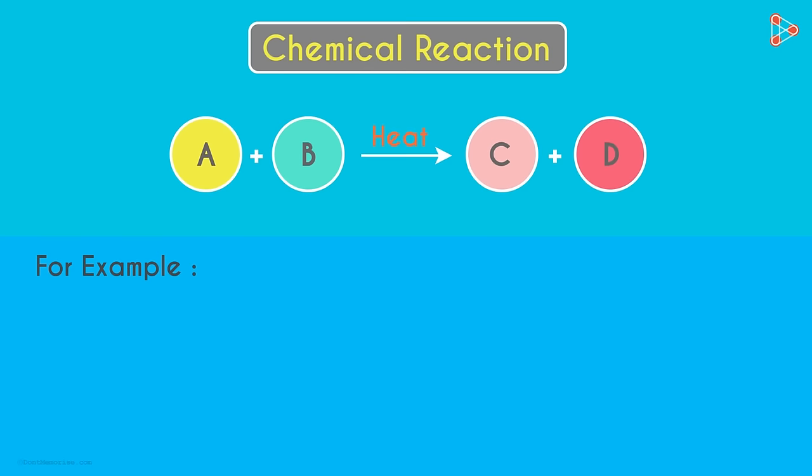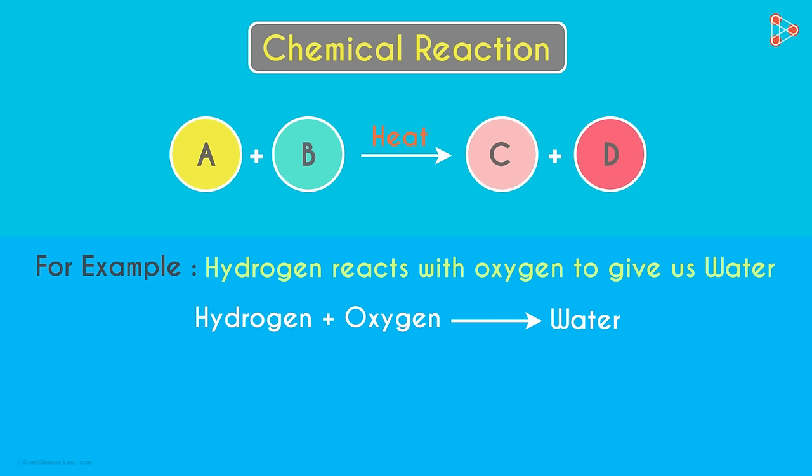To give you an example, we know that hydrogen reacts with oxygen to give us water. As it's a chemical change, it implies that a chemical reaction took place. Using words, we can represent the chemical equation like this. Can we make it simpler?